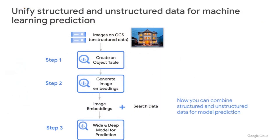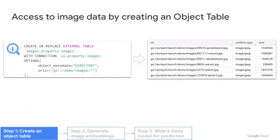So how was Twitty able to go from using just structured data to using both structured data and image data to predict the click-through rate of their rental properties? Here are the steps they took. First, they already had images stored on GCS. So the first step was to create an object table, which points to all those hosted images stored on GCS — a brand new capability announced today, which means you can now access unstructured data right inside BigQuery.